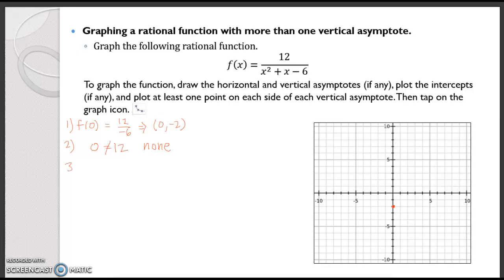For asymptotes, the vertical asymptotes are wherever the denominator equals 0. A good first step for all of these is to factor everything. The denominator factors into (x + 3)(x - 2), so the vertical asymptotes happen at x equals negative 3 and x equals 2.